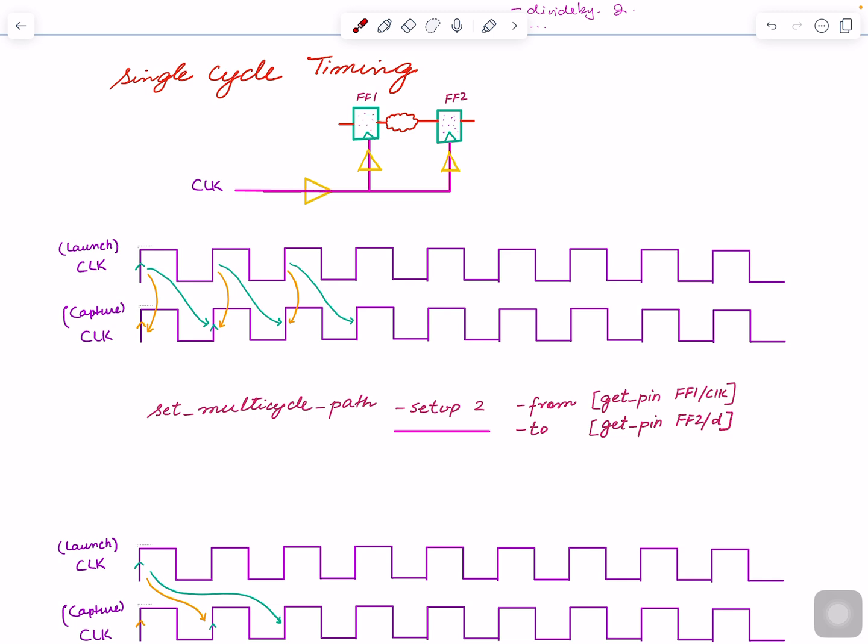Now let's say on this particular flop, our architect or designer or RTL person tells us that actually the data that I'm launching here—I'm not going to capture it, that is functionally, until this edge. What I launch here, I actually have—I will allow two cycles. I will not capture on this one, but I'll capture the next one. That means you have now more time available.